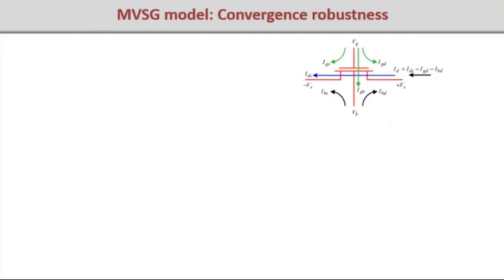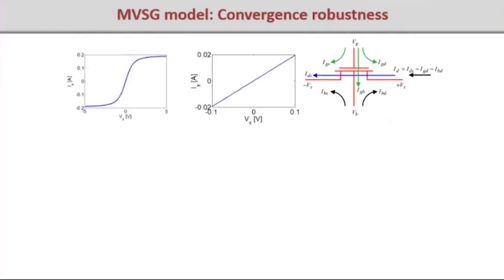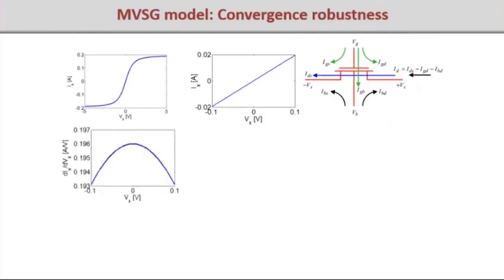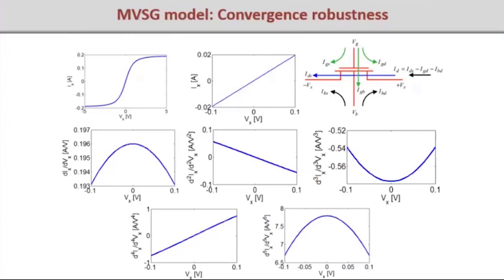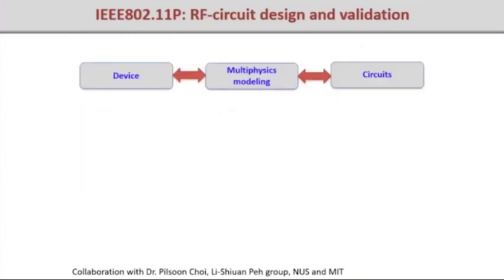For convergence robustness, the Gummel symmetry test is applied: sweeping Vx from negative to positive and examining the current along with its first, second, third, and higher derivatives. Physically based compact models should show infinitely differentiable behavior — no discontinuities especially at VDS = 0 where the device switches from forward to reverse mode — and this model satisfies that.